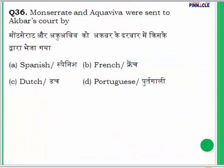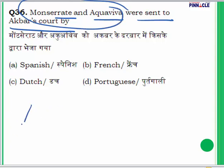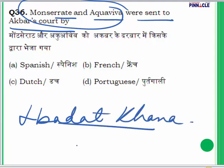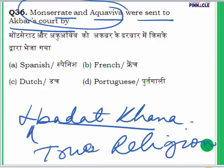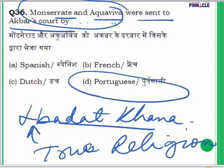Question 36: Monserrate and Aquaviva were sent to Akbar's court by whom? These two names are important because Akbar had built an Ibadat Khana at Fatehpur Sikri. He wanted to know what exactly is the true religion, so he invited different religious leaders — including atheists — to discuss religion. He discussed Christianity with these two men, and they were sent to Akbar's court by the Portuguese. The answer to question 36 is D — Portuguese.